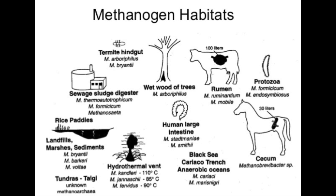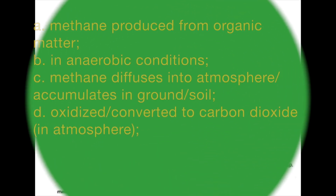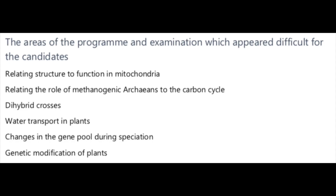So it's very important that we reflect on sources of methane gas and the habitats that encourage methanogenic bacteria to release greenhouse gases into the atmosphere. One area of concern in particular is cattle farming. In the examination, stating any two of these points would have been sufficient to score the two marks. In our next video, we look at the topic of water transport in plants — just click on the card above to go straight to that video.